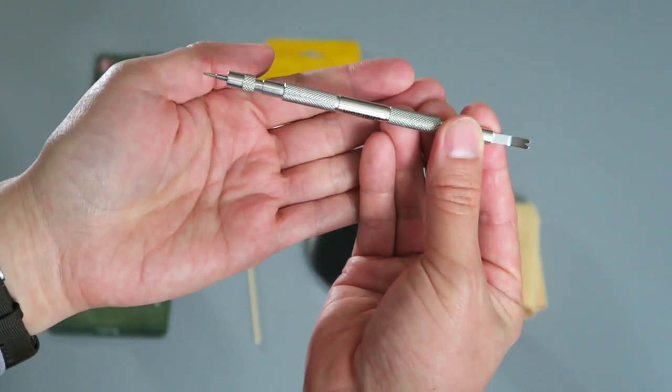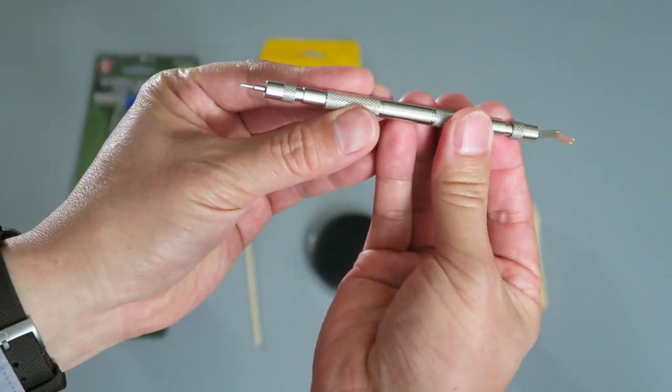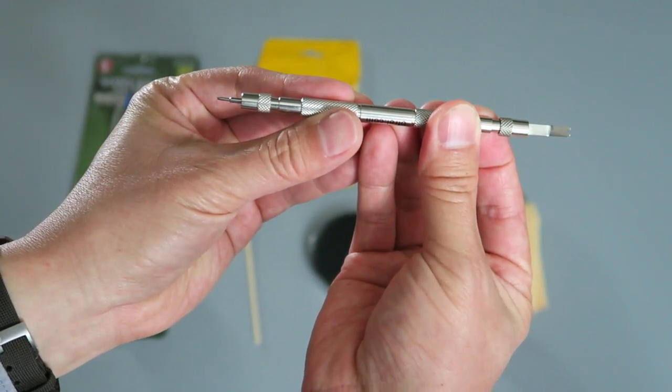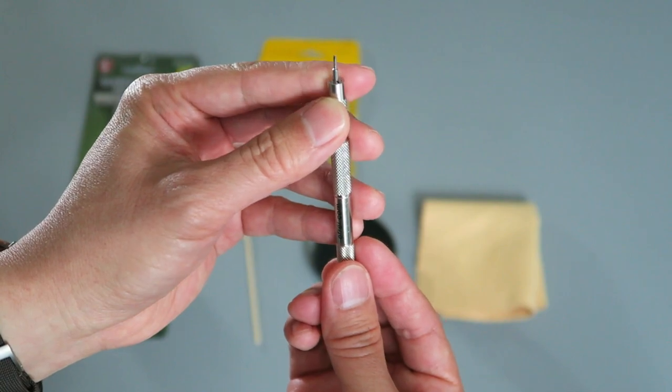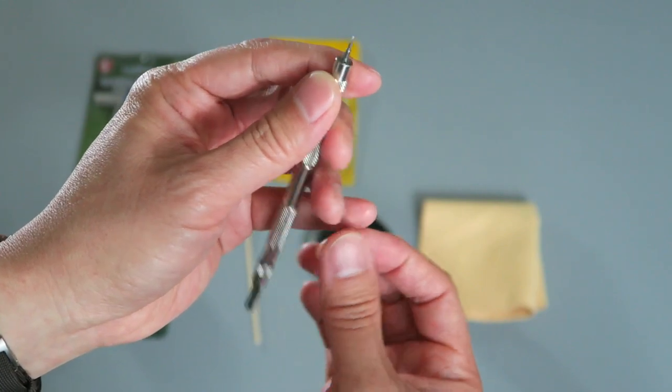The first and most often used tool you see here is the spring bar tool. I use this tool absolutely the most often out of all the watch tools that I own. As you can see, it's got a small side and a large side.